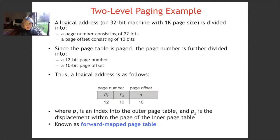Thus, a logical address is as follows. We have 12-bit p1, 10-bit p2, and 10-bit displacement d. Here, p1 is an index into the outer page table and p2 is the displacement within the page of the inner page table. This is known as forward mapped page table.